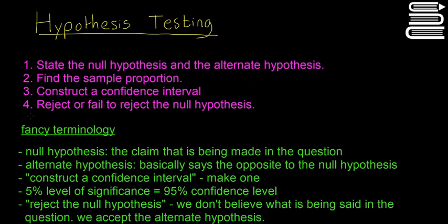So there's four steps in the hypothesis test and you have to learn these steps off. First, you have to state the null hypothesis, which you'll write as H0, and the alternate hypothesis, which you'll write as H1. Next step, step two is you have to find the sample proportion, or else sometimes you're going to have to find the sample mean.